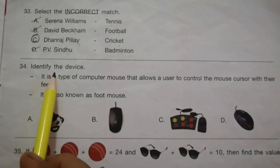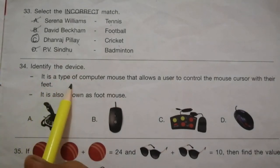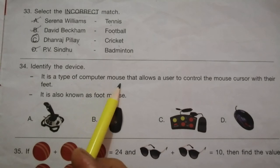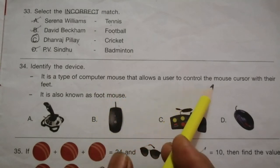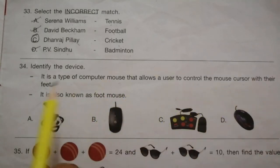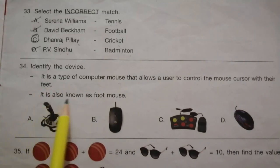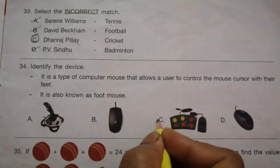Question 34: Identify the device. It is a type of computer mouse that allows a user to control the mouse cursor with their feet. It is also known as a foot mouse. Look at the options. The answer is C.